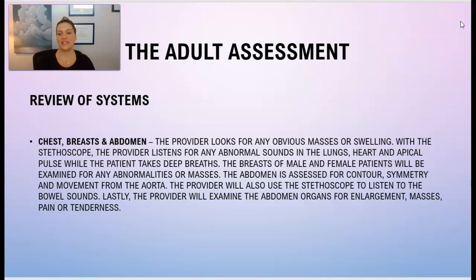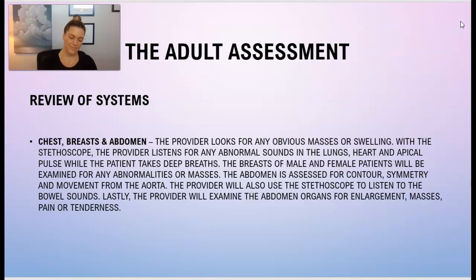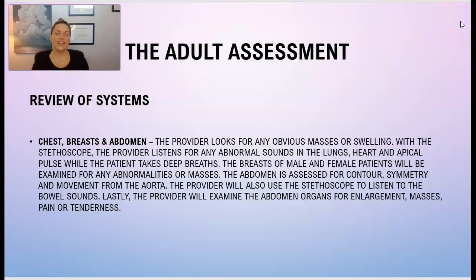The abdomen is assessed for contour, symmetry, and movement from the aorta — as we've learned, the aorta extends all the way down into the abdomen. The provider will also use the stethoscope to listen for bowel sounds, and lastly the provider will examine the abdominal organs for any enlargement, masses, pain, or tenderness.